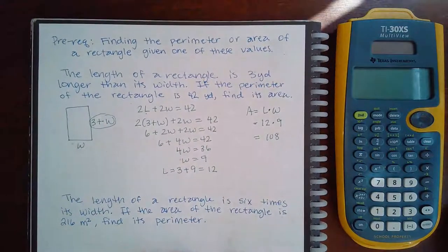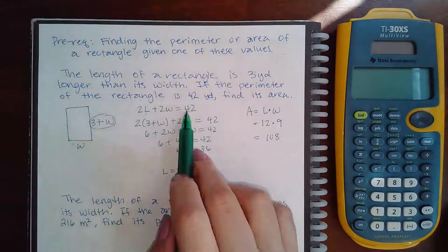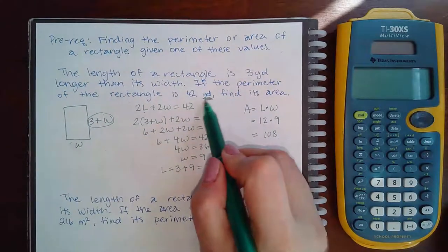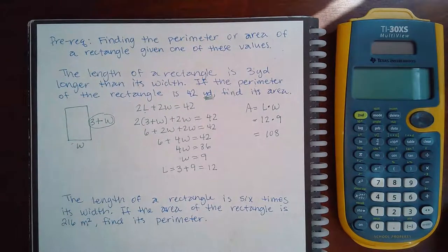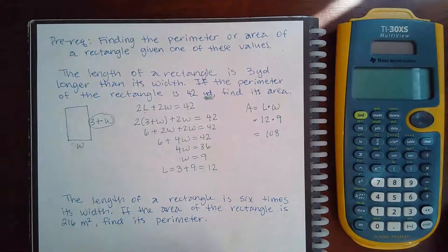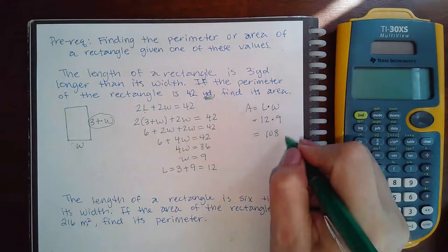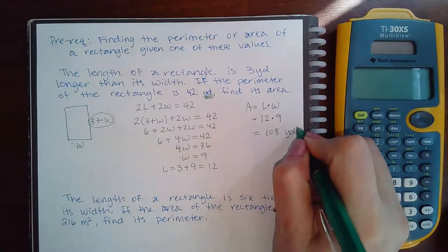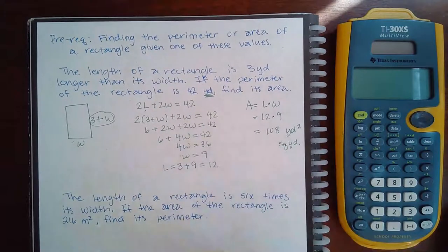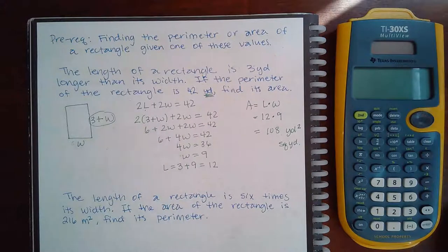Now, what are the units? Perimeter is just distance around, so that will always be regular units like yards. Area, you can think of like square footage, right? The floor in your apartment or your house is going to be the area, okay? So that one's going to be yards squared, or you might see it like square yards. Area is a square unit, so the perimeter is a single unit.